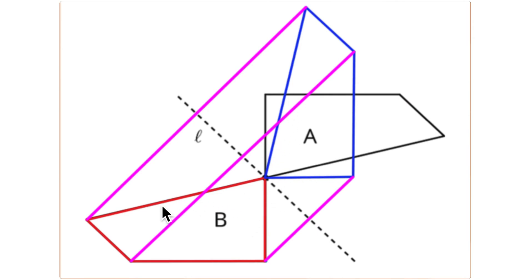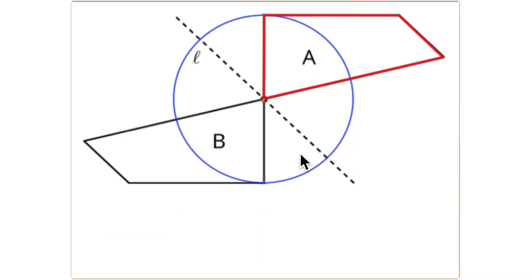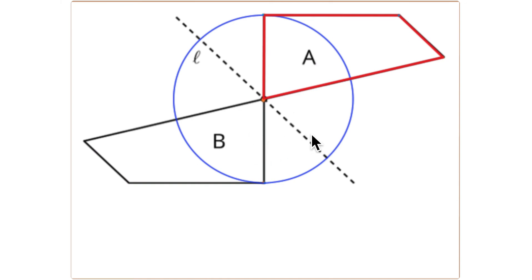When you do that, you see that A is not a reflection of B. The reflection of B ends up as this blue shape here, and it does not cover A. However, since A is a 180-degree rotation of B, whenever you have a 180-degree rotation you can always get from one shape to the rotated shape through two reflections.